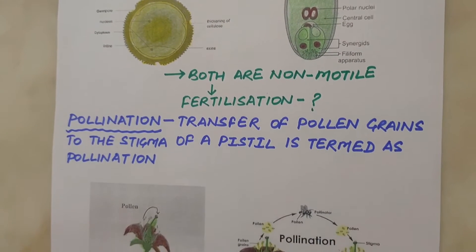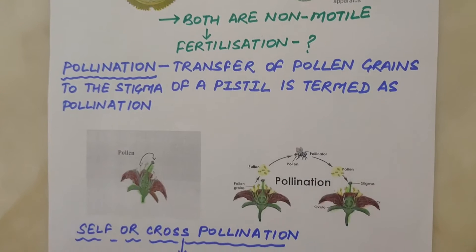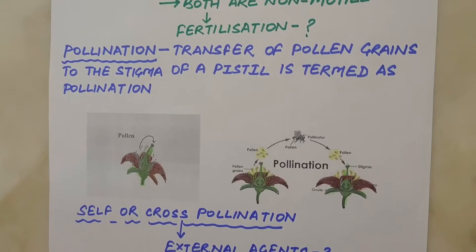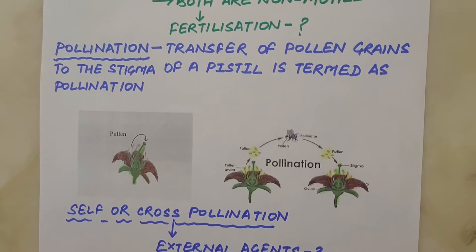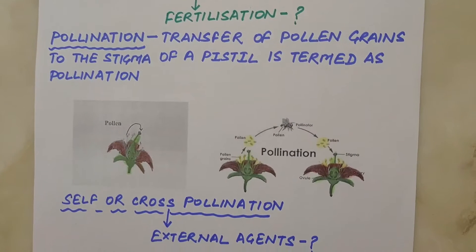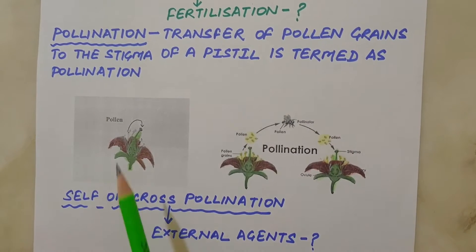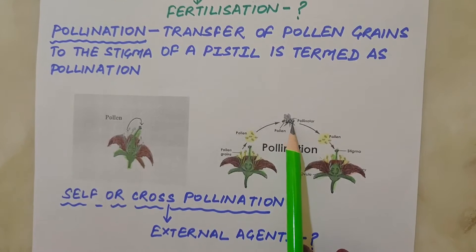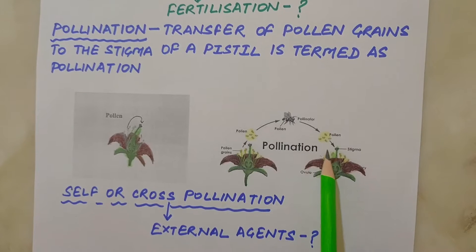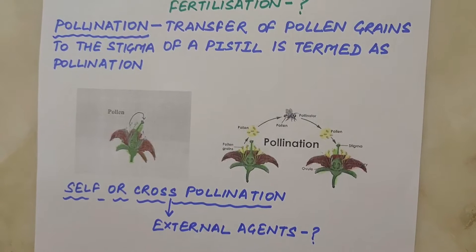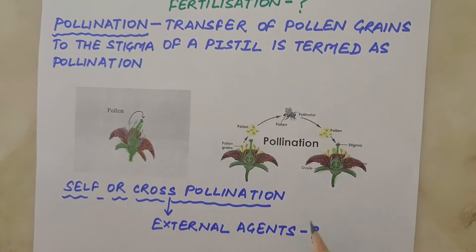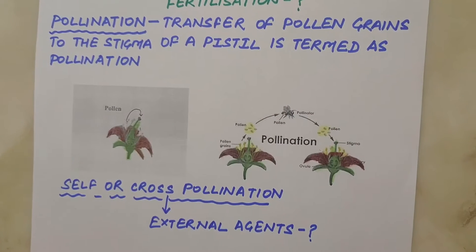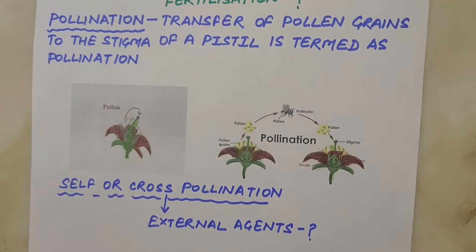You have learnt in lower classes that pollination is of two types: self-pollination and cross-pollination. Flowering plants have evolved an amazing array of adaptations to achieve pollination. Plants make use of external agents to achieve pollination. These agents are insects, bat, bird, or even abiotic factors like water and wind.